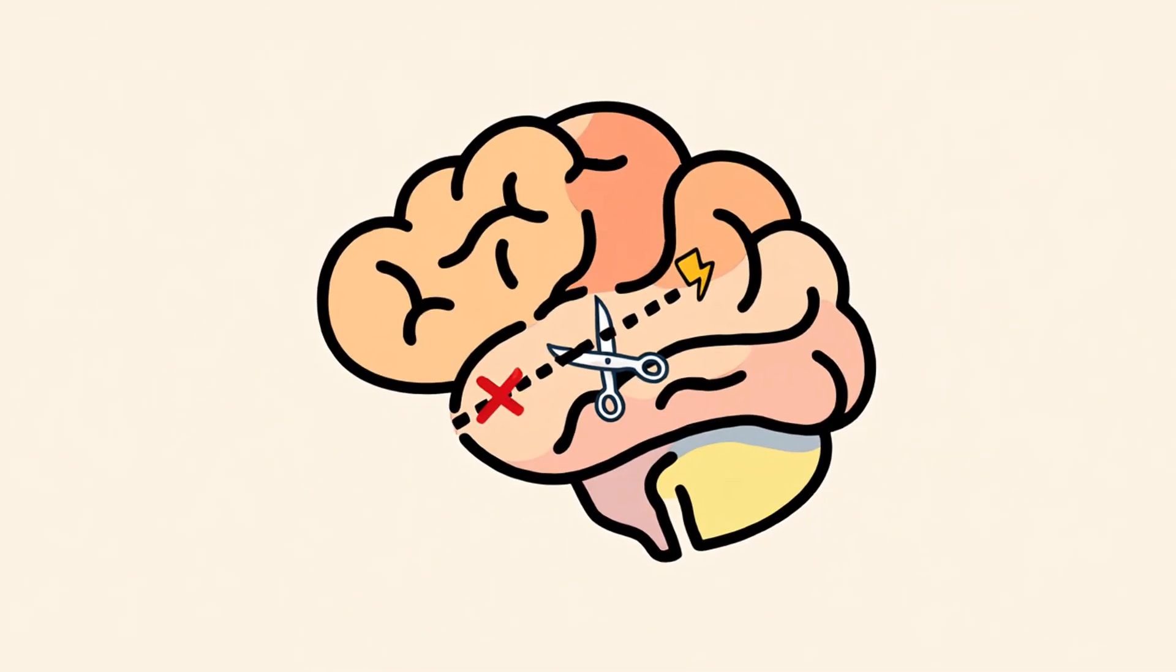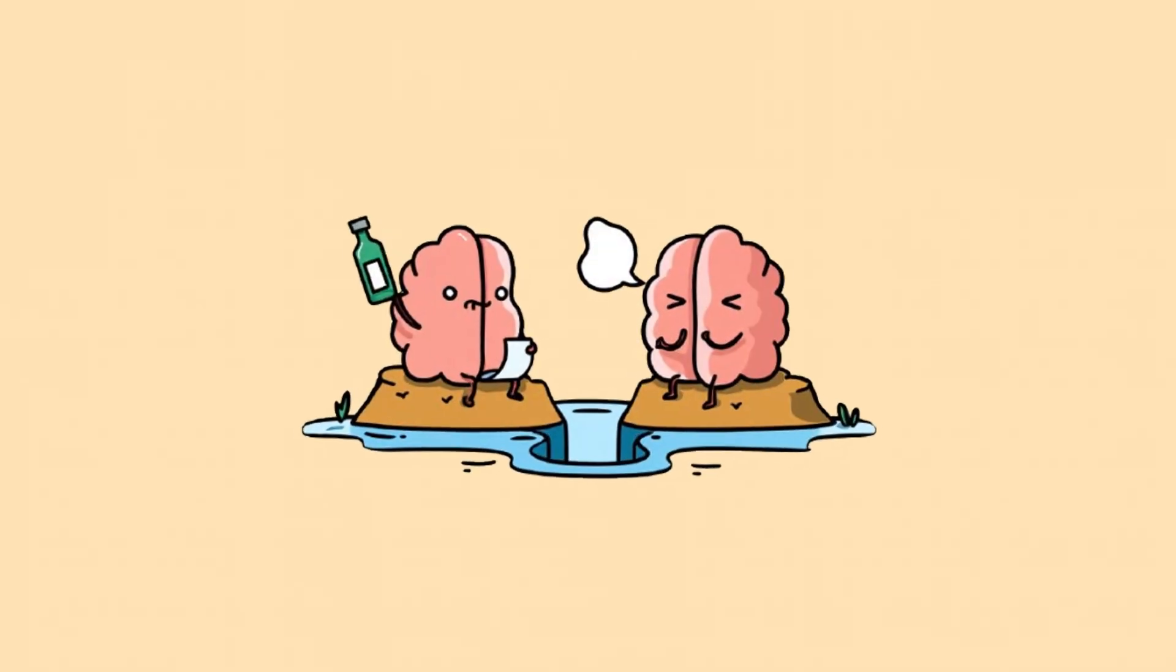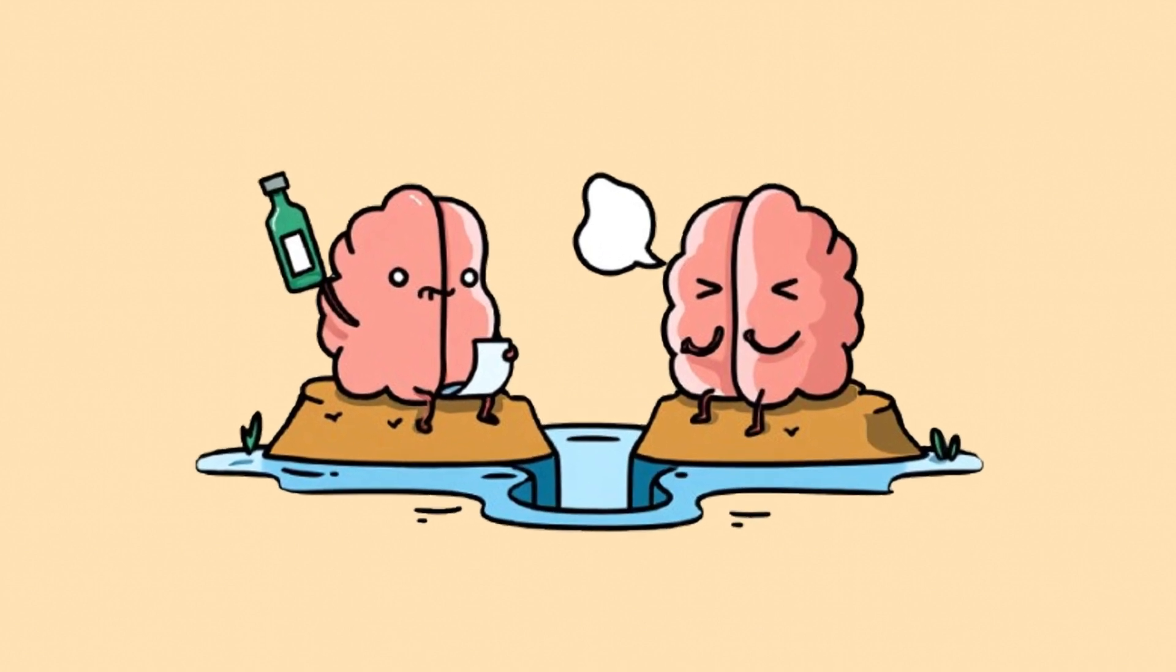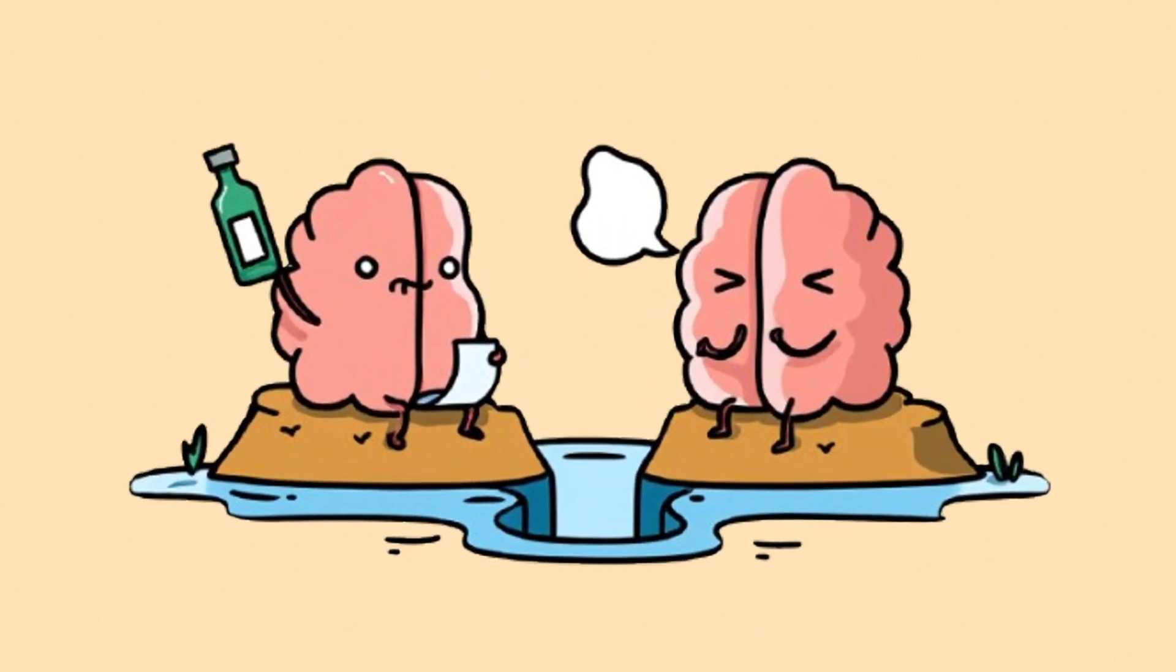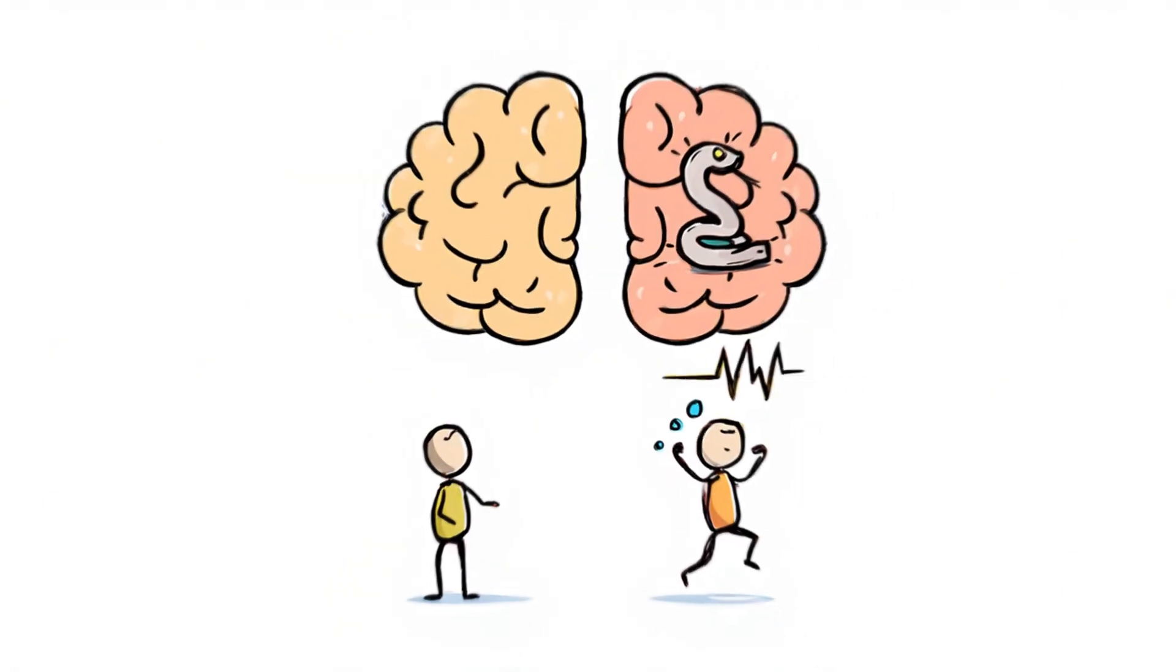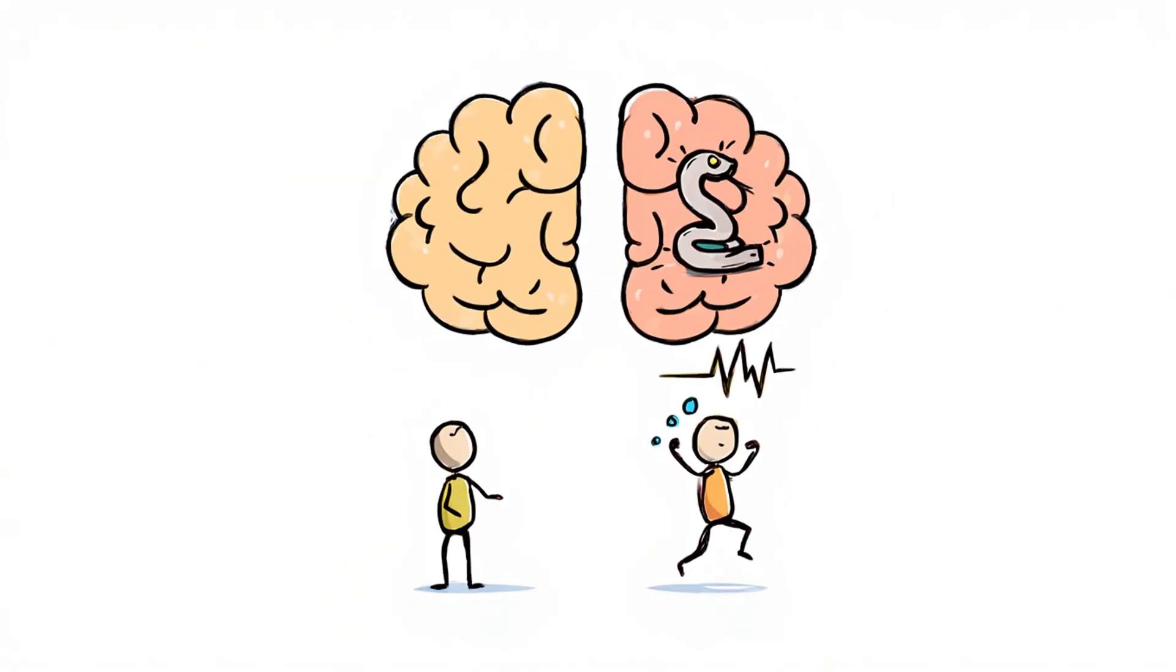Scientists discovered this mind-blowing glitch by studying people who had undergone corpus callosotomy, a surgery that separates the two hemispheres of the brain, usually to treat severe epilepsy. After the surgery, the left and right hemispheres couldn't chat anymore. That's when things got weird. If scientists flashed a scary image to the right hemisphere, which processes emotion but can't speak, the person would physically react. Heart racing, startled expression, sweaty palms.